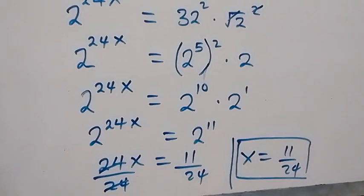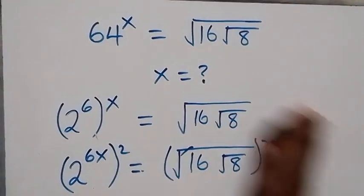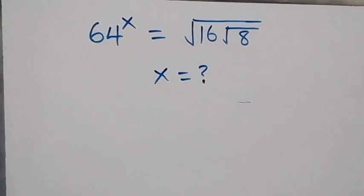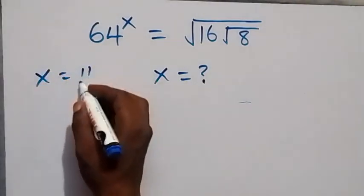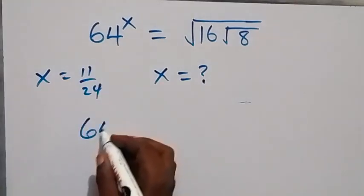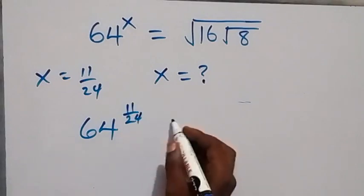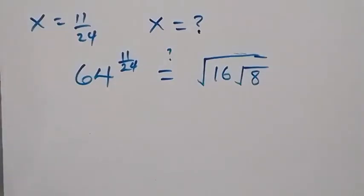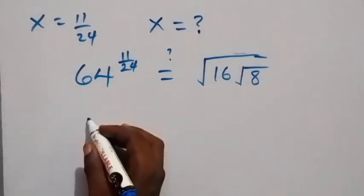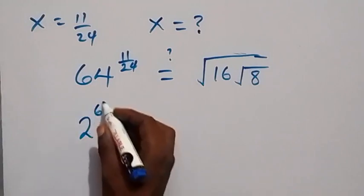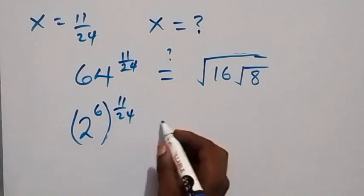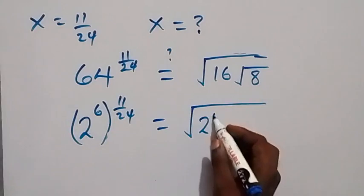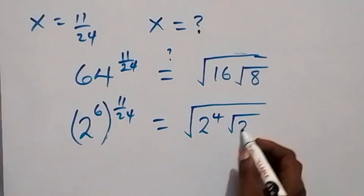Let's check if this satisfies the given problem. We have x equals 11 over 24. To verify, we substitute x as 11 over 24, so this becomes 64 raised to power 11 over 24 equals root 16 times root 8. We write 64 as 2 raised to power 6, raised to power 11 over 24. On the right, we write 16 as 2 raised to power 4, times square root of 2 raised to power 3.